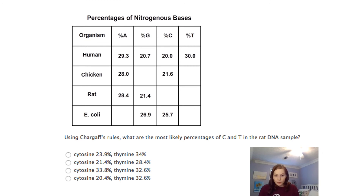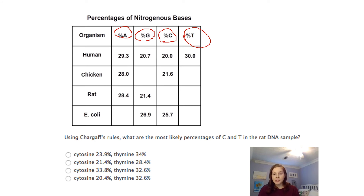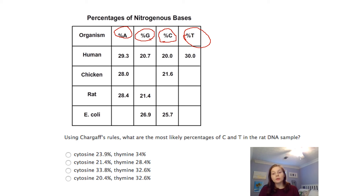In DNA, A binds with T and G binds with C. There was a scientist named Chargaff who found that the percentage of adenine in DNA equaled the percentage of thymine, determining that adenine binds with thymine — for every A you need a T. He also found that the percent of guanine tended to equal the percentage of cytosine, meaning G bonds with C. So Chargaff discovered what base pairs with what.